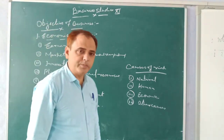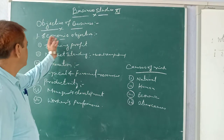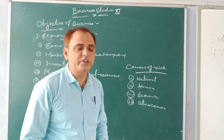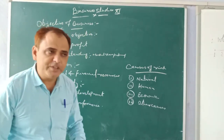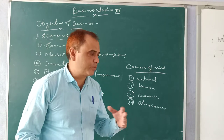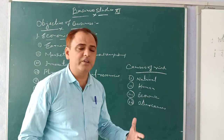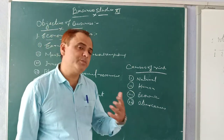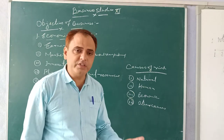Why do people do business? So the objective of business — the first one is the economic objective. All human beings do economic activities for their livelihood. What they do is basically selling goods and services. Some people produce goods, some sell goods wholesale or retail, and most people earn by selling or producing their goods.